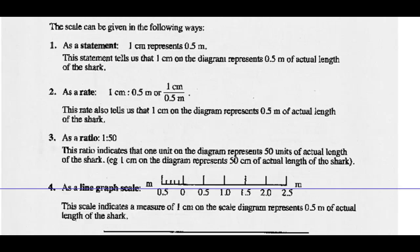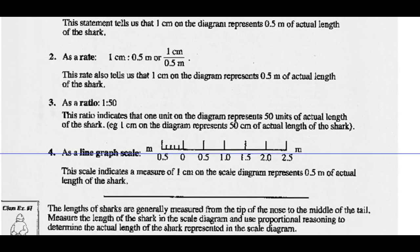Two, you could give it as a rate: 1 centimeter to 0.5 meters, or 1 centimeter over 0.5 meters. This rate also tells us that 1 centimeter in the diagram is half a meter of the shark's actual length.